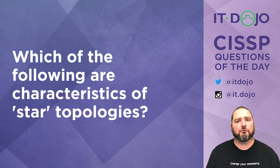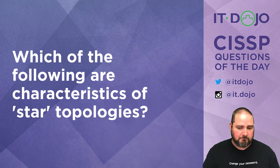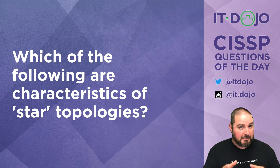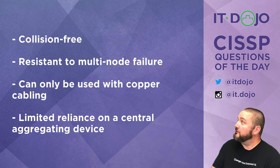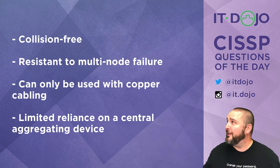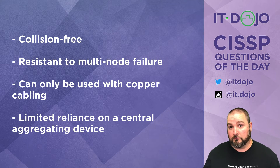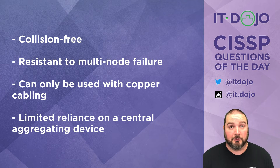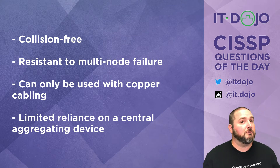Question one: which of the following is a characteristic of a star topology? In context with other topologies like mesh and bus, which fits with a star topology? The first answer choice says star topologies are collision free — that is just straight up not true, so that's not what we're looking for.